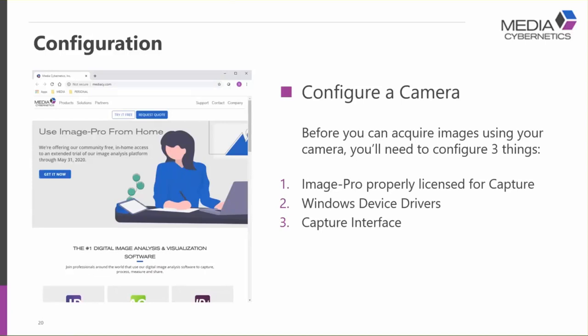Once Image Pro is properly installed and licensed, the next step is to configure it for camera use if needed, or to import old settings files. Before you can acquire images directly into Image Pro you need to configure three things: first, Image Pro itself — properly licensed for capture, which following the earlier instructions already handles; second, the Windows device driver for your camera, which identifies the camera to Windows and lets Windows interact with it. These drivers are provided by the camera manufacturer and installed by the manufacturer's software.